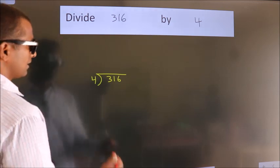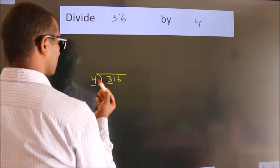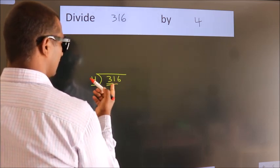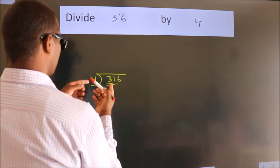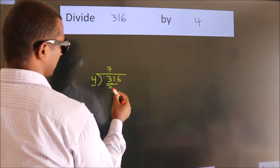Next, here we have 3, here 4. 3 is smaller than 4, so we should take 2 numbers, 31. A number close to 31 in the 4 table is 4 times 7, which is 28.